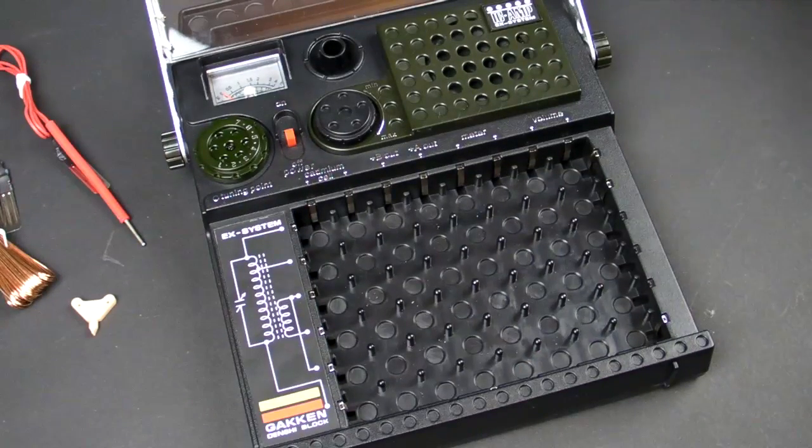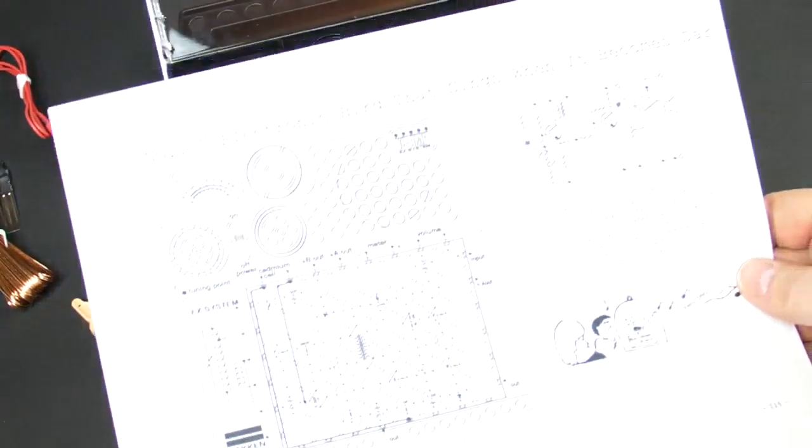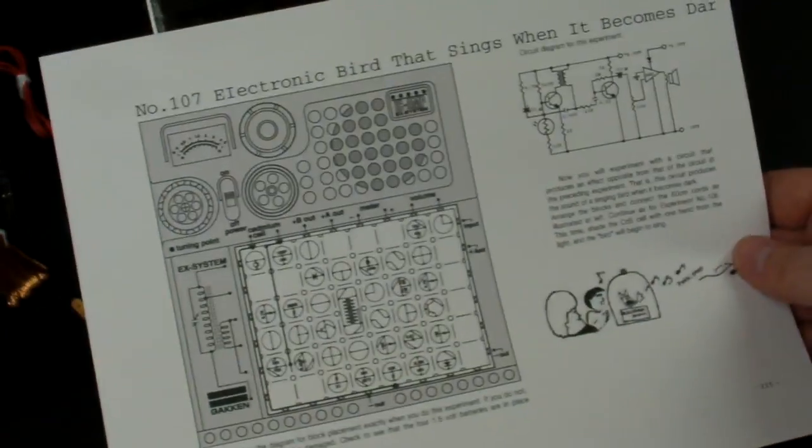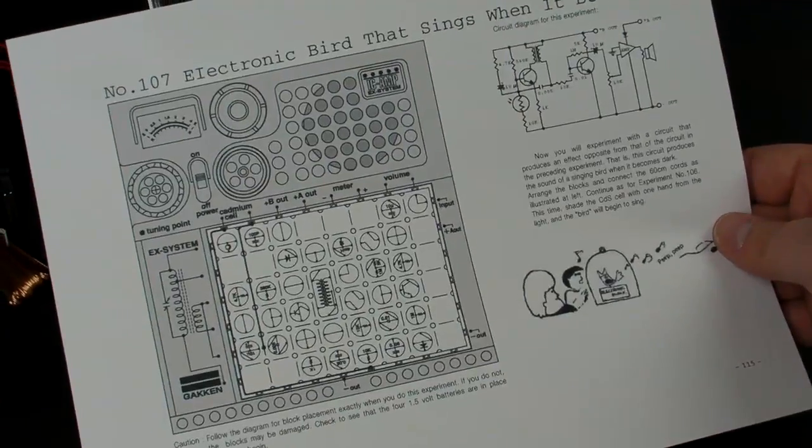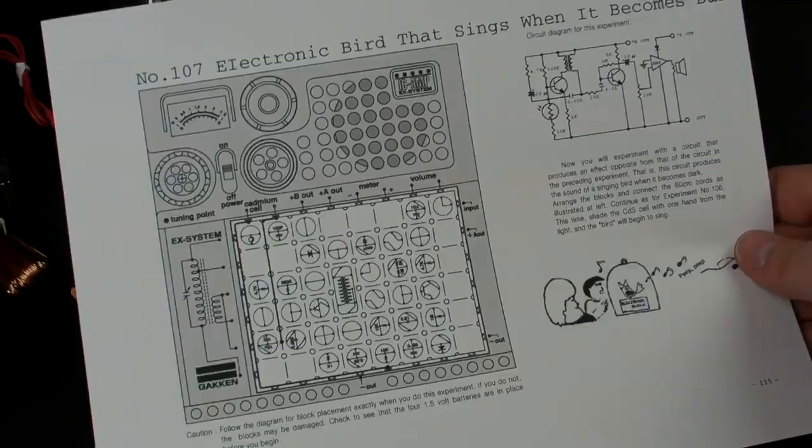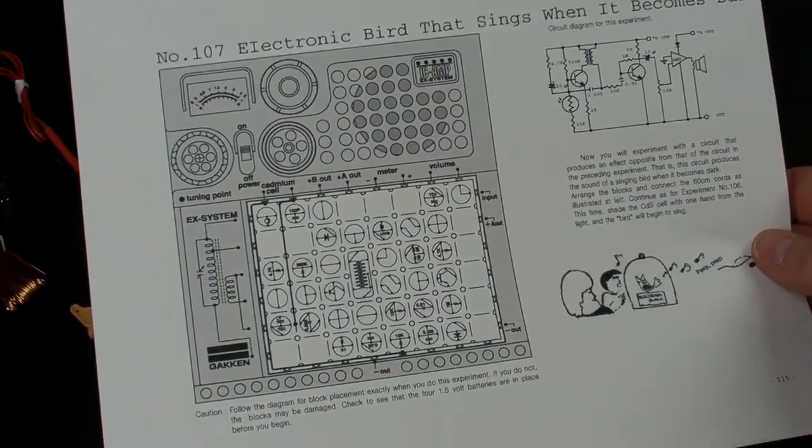All right, I went back and took a look at the PDF, and I decided to do experiment number 107, the electronic bird that sings when it becomes dark. So let's go ahead and build this circuit. Sounds interesting. Let's see how it goes.